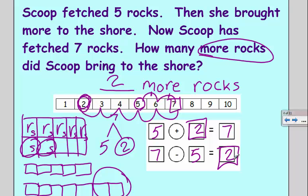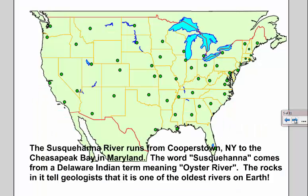Let's check out some facts about the Susquehanna River. That's where Scoop was fetching. So we live in New York and the Susquehanna River starts in Cooperstown where the Baseball Hall of Fame is and runs all the way down to the Chesapeake Bay in Maryland. Geologists, meaning scientists who study rocks, have discovered that this is one of the oldest rivers on Earth, older than the mountains around it. Pretty cool to know that's where you live.